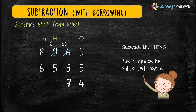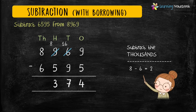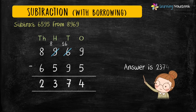Now let's subtract the digits at hundreds place: 8 minus 5 equals 3. And then subtract the digits at thousands place: 8 minus 6 equals 2. So our answer is 2374. This is how we do subtraction of four-digit numbers with borrowing from hundreds place.